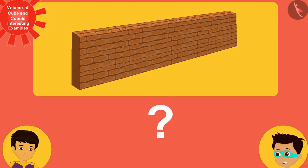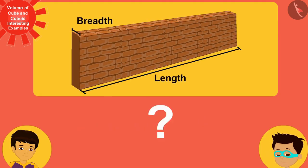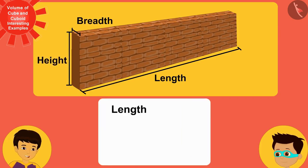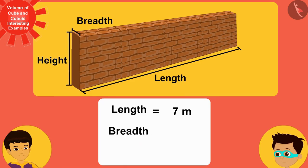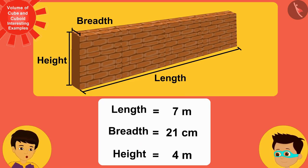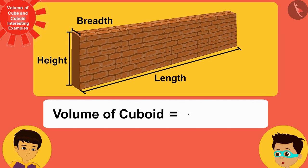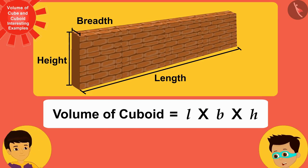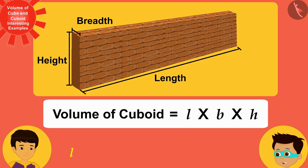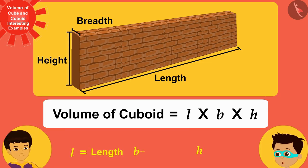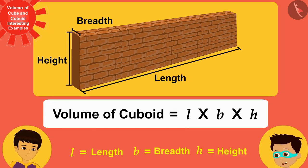Can you tell me what is the length, breadth and height of this wall? The length of the wall is 7 meters, its width is 21 centimeters and the height of the wall is 4 meters. Now, we know that the volume of the cuboid is the product of L, B and H, where L, B and H are its length, breadth and height respectively.